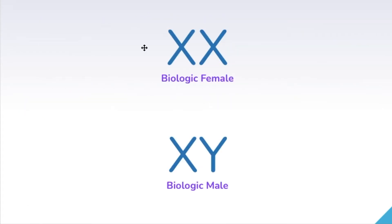If you're biologically female, you have two X sex chromosomes. If you're biologically male, your sex chromosomes are X and Y. We do see some differences in certain genetic disorders where we have different combinations of these, but we'll get into that when we start talking about genetic differences.